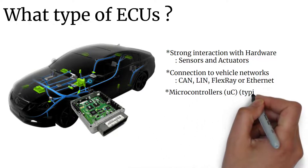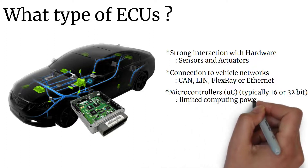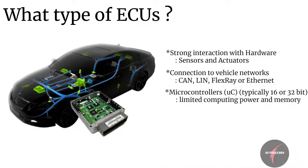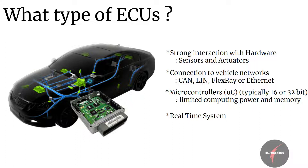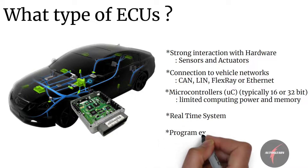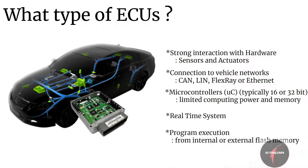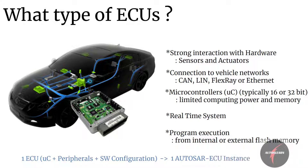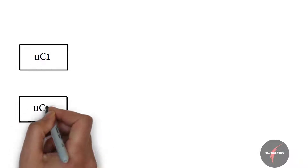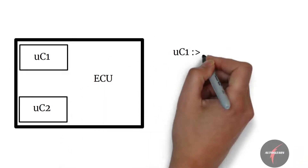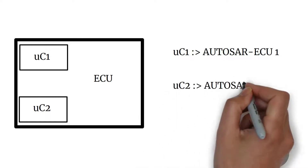They have microcontrollers typically of 16 or 32-bit with limited resources of computing power and memory compared to enterprise solutions. They are real-time systems, and program execution happens from internal or external flash memory. One ECU — that is, one microcontroller with peripherals and the corresponding software configuration — shall have one AUTOSAR ECU instance. If there are two or more microcontrollers in an ECU, each microcontroller requires its own description of an AUTOSAR ECU instance.